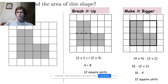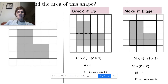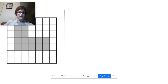So this is how we can calculate the area of a composite shape: we either break it up or we make it bigger. When we break it up we're adding the areas of the two or three rectangles. When we make it bigger we pretend that we have a bigger rectangular shape and then we subtract the part that we don't need.